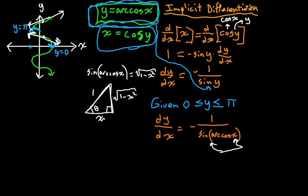And we get our final answer. We get our final answer that dy/dx is equal to negative one over the square root of one minus x squared.